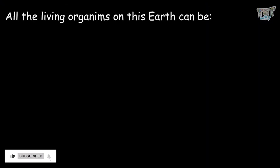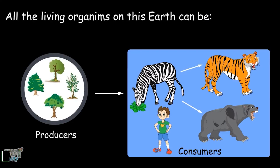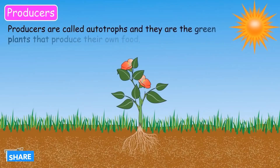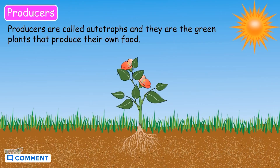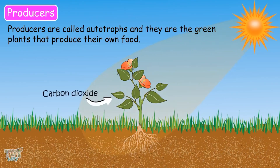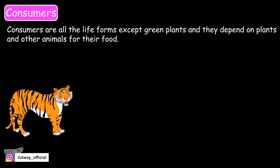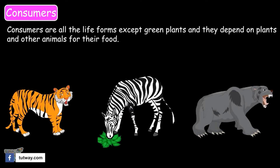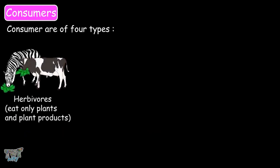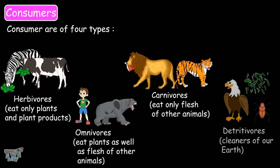What did we learn? We learned that all living organisms on this earth can be producers or consumers. Producers are also called autotrophs — they are the green plants that produce their own food using sunlight, carbon dioxide, nutrients, and water. Consumers are all life forms except for green plants, and they depend on plants and other animals for their food. Consumers are four types: herbivores, omnivores, carnivores, and detritivores.